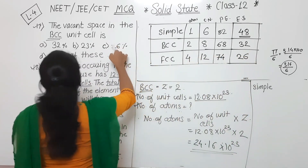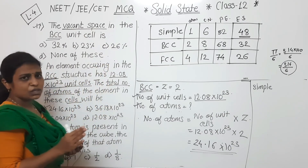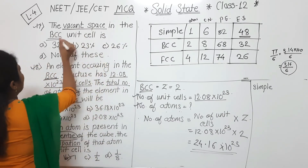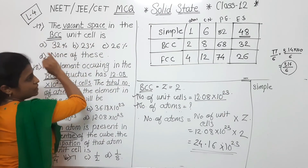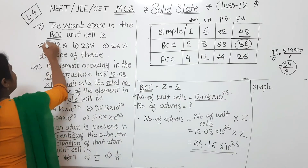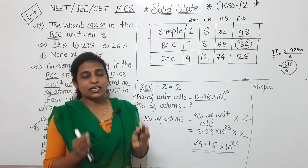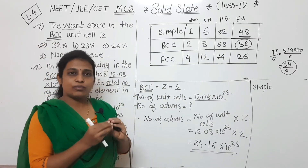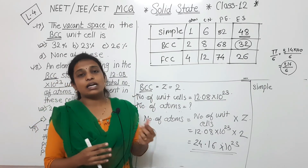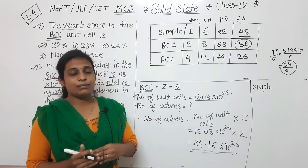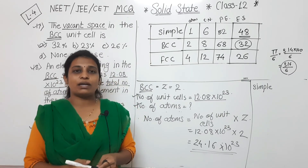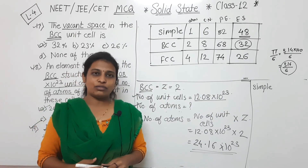The question is about vacant space in BCC — vacant space is the same as empty space. For BCC, that is 32%, so the answer is option A. We will increase the level of difficulty as we continue this series on solid state. Stay connected with our channel, share with your friends, please subscribe. Thank you all.